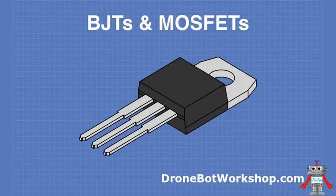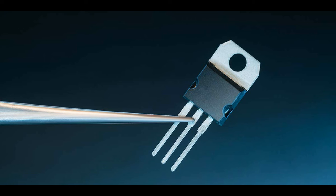Linear regulators with MOSFETs as series pass elements can dissipate significant power as heat, especially when there is a large difference between the input and output voltages, whereas switching regulators are more efficient and generate less heat. MOSFETs in voltage regulators often have built-in features like current limiting and over-temperature protection. In summary, MOSFETs contribute to the efficiency, precision, and reliability of voltage regulation across a wide range of applications.